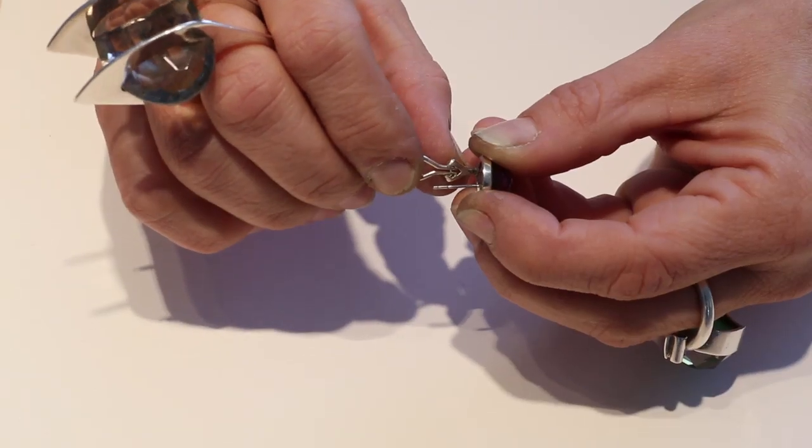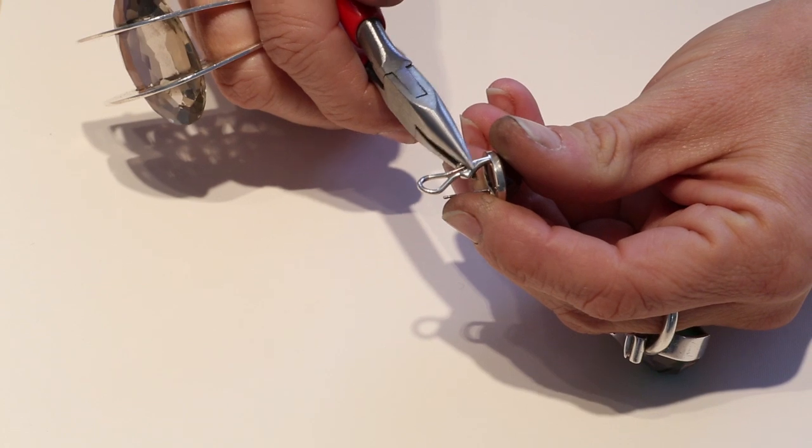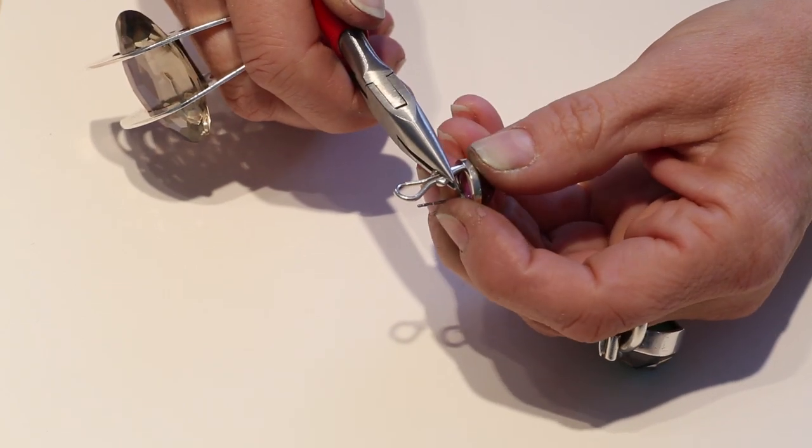The most common problem if earrings are too tight is the omega clip in the back. You can fix that by bending that little piece which is attached to the earring a little bit to the back - that loosens the clip.